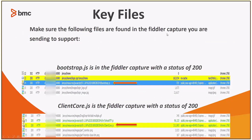In the Fiddler capture that you created, you want to make sure that you have two important key files and that the status or result of these files is 200. They are the bootstrap.js file — you can see the result is 200 — and also the clientcourt.js file. The result is 200. What the 200 means is it's not cached and it can be used to recreate or replay the Fiddler capture that you have sent.